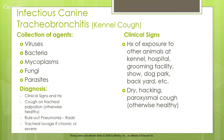Infectious canine tracheobronchitis is the fancy name for kennel cough, caused by a collection of agents — viruses, bacteria, mycoplasmas, fungi, and parasites. Diagnosis is through clinical signs: history, cough on tracheal palpation, and the animal being otherwise healthy. We need to do x-rays to rule out pneumonia, because treating for kennel cough while the animal has pneumonia can make the pneumonia worse.